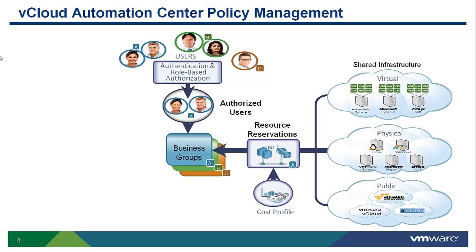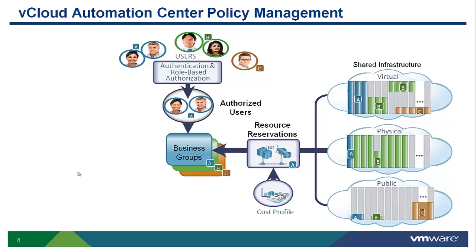Second, we have resource reservations. Reservations allow administrators to allocate previously discovered virtual, physical, or cloud resources to each group. As part of assigning resources to a group, you can associate cost to those physical resources. Resource reservations can be grouped by service level as part of the reservation process. When users request machines, they will be charged based on a prorated consumption of these resources.